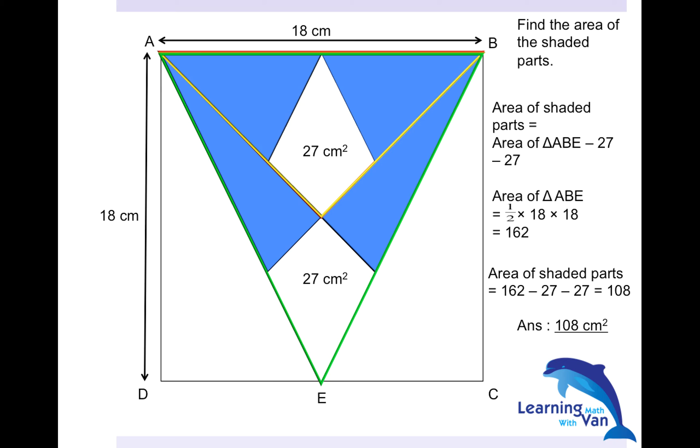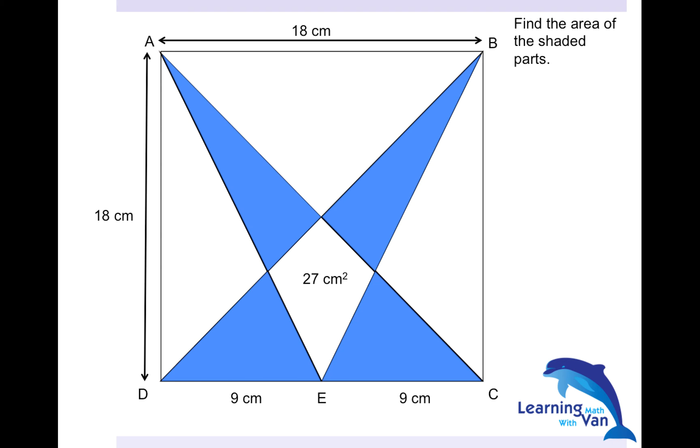Alternatively, you may want to look at this question from another perspective. As what I always say, group them together to form a bigger triangle so that you have measurements with regards to the base and the height. And with that, you have a formula. As what I said just now, DE is equals to EC. So divided by 2, DE is equals to 9 centimeters. EC is also equals to 9.